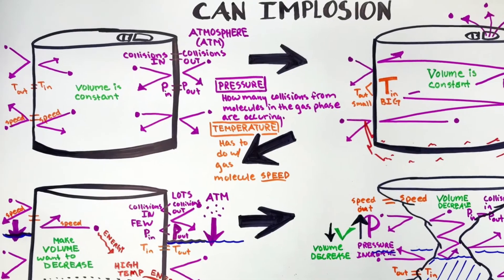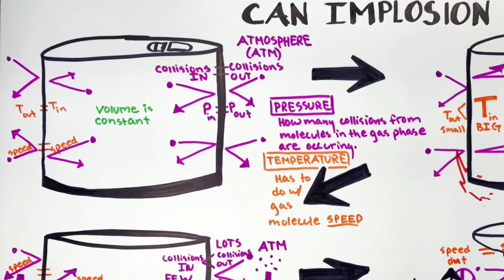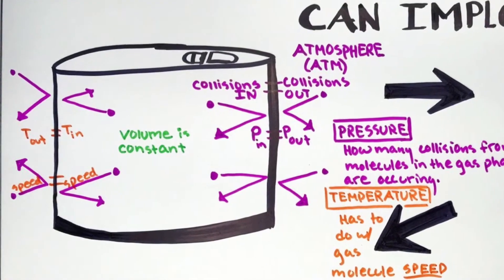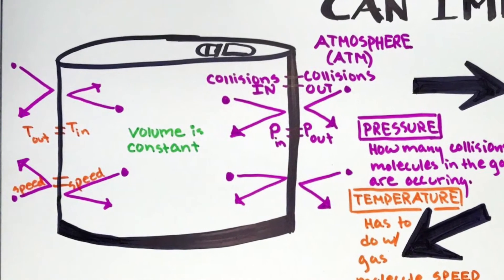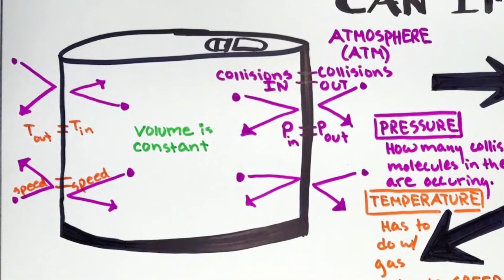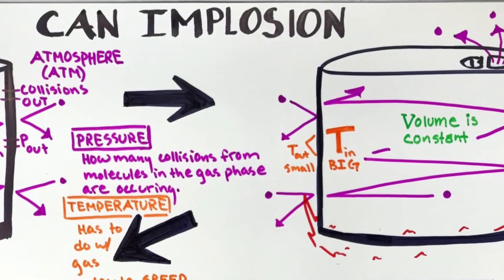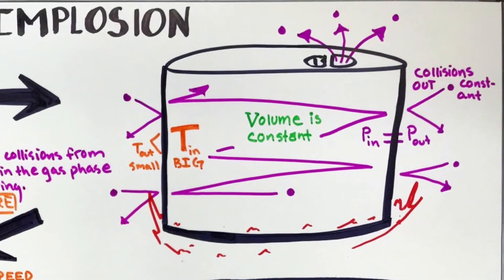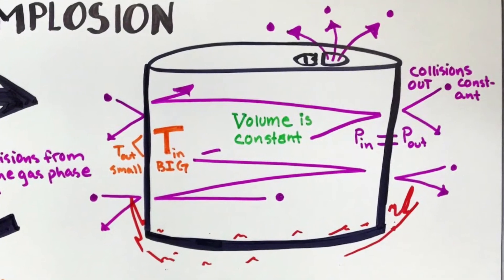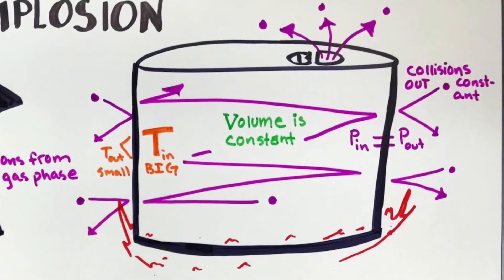So we had same number of collisions to start. Collisions, pressure, temperature, speed, all the same to start. Can's not changing. And then what did we do? We heated up the can. So now we had some of our gas molecules leave and we had fewer gas molecules moving faster that all balanced the exterior collisions to keep pressure constant.